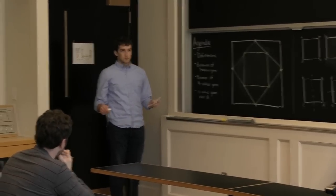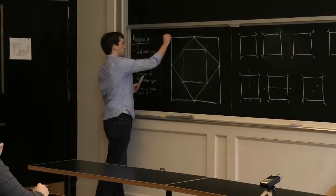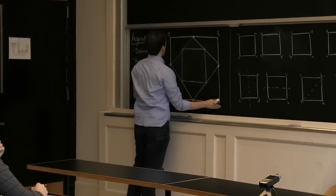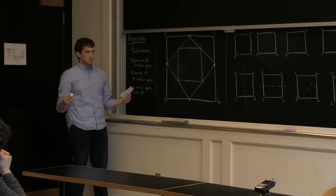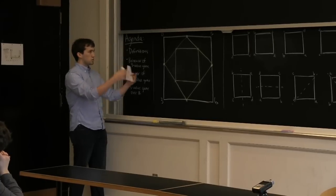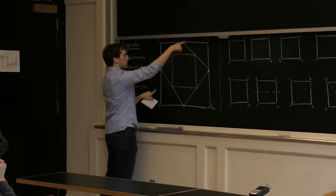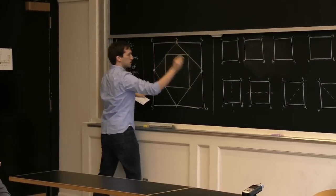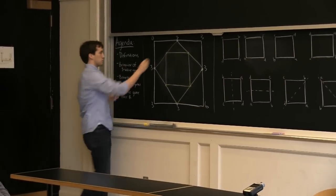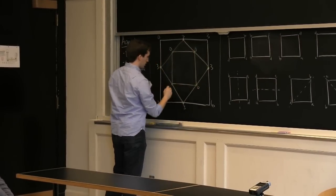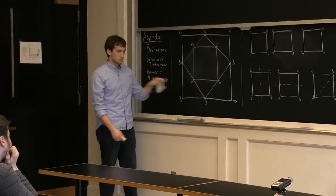Before we get started, here is a quick example of the four-value game where we have four integers. We label these vertices 0, 3, 6, and 3. In this game, this dynamical system, every time we move to a new state, we take the vertices, make a point at the midpoint, and label it with the absolute value of the difference. This gives us 3, 3, 3, and 3. If we iterate once more, we go to 0, 0, 0, and we can see that if we keep going, we stay at this fixed point 0, 0, 0, 0.